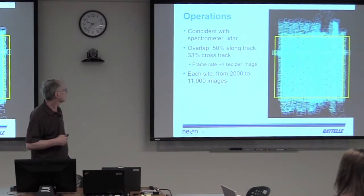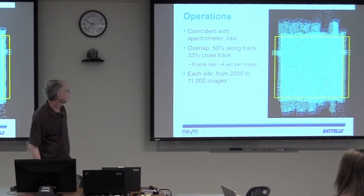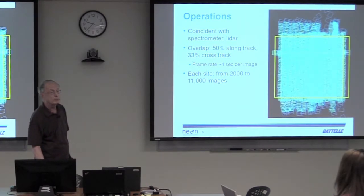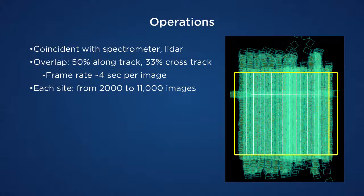In operations it's coincident with the spectrometer. We have about 50% overlap long track and 33% cross track. Nominally the frame rate is about 4 images per second. At each site we may collect between 2,000 and 11,000 images over several days.